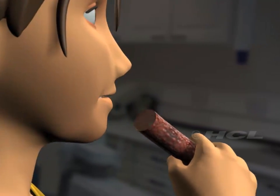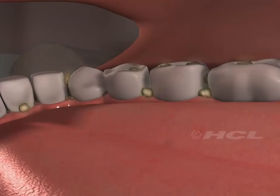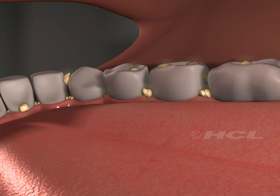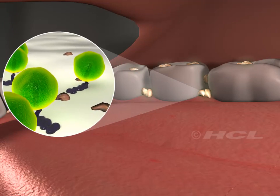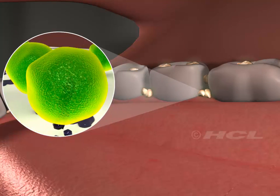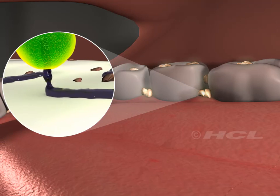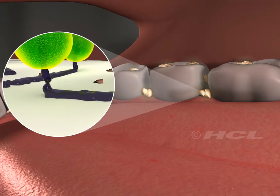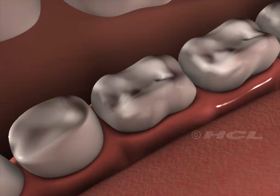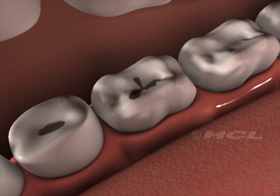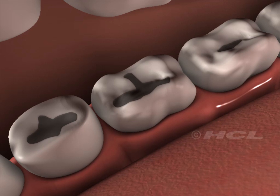Whenever a person eats, small pieces of food are often left behind on the teeth. The germs in the mouth combine with the sugar present in the food particles or the drinks and form an acid. The acid can destroy the protective enamel covering on the teeth, causing holes or cavities. This is the beginning of tooth decay.